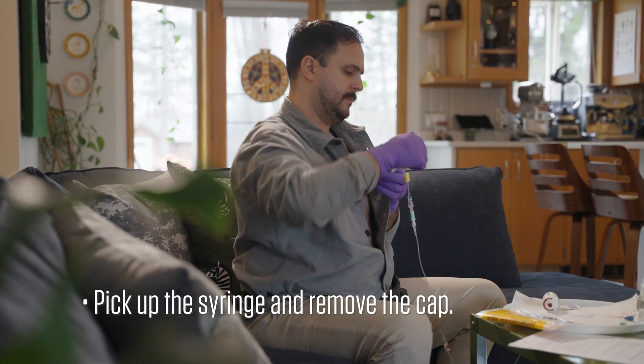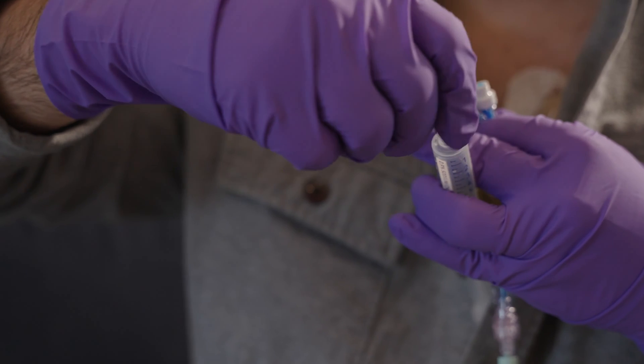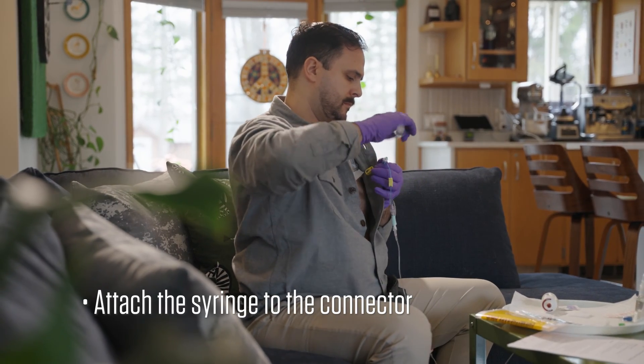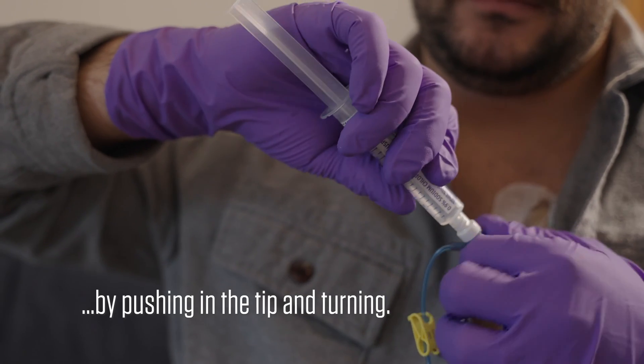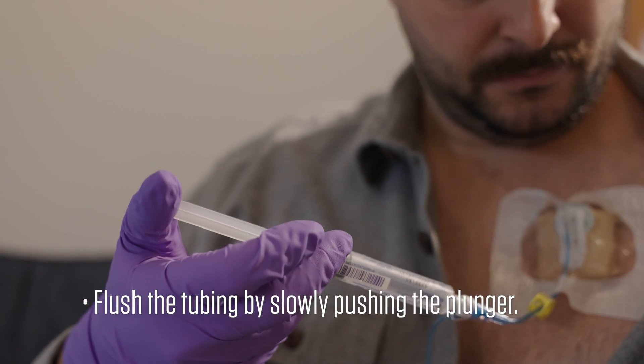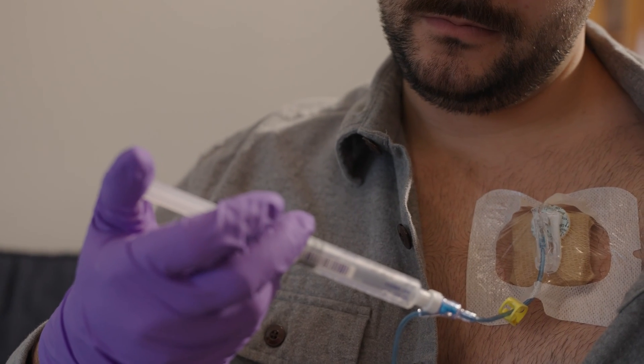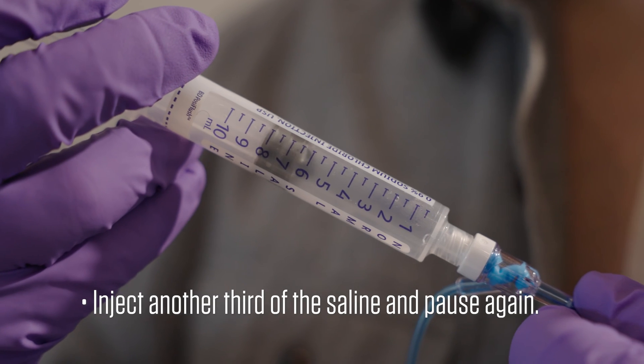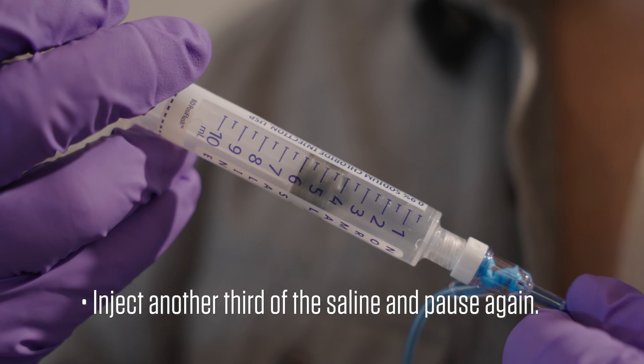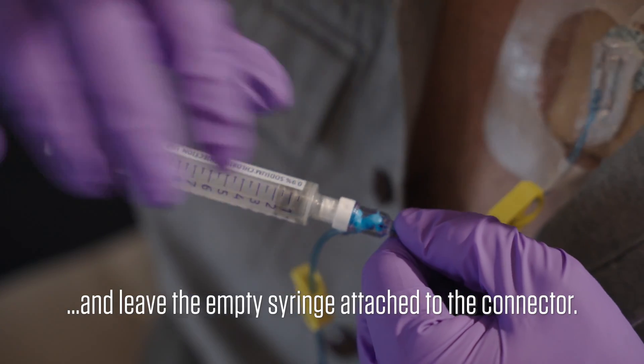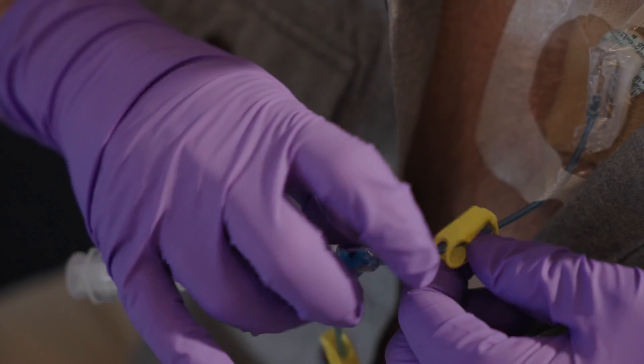Pick up the syringe and remove the cap. Attach the syringe to the connector by pushing in the tip and turning. Flush the tubing by slowly pushing the plunger. Inject one third of the saline and pause. Inject another third of the saline and pause again. Then inject the last third of the saline and leave the empty syringe attached to the connector.